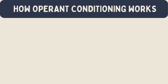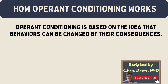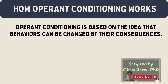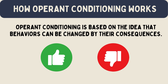How does operant conditioning work? It is based on the idea that behaviors can be changed by their consequences. If a behavior is followed by a good result, it is more likely to happen again. If a behavior is followed by a bad result, it is less likely to happen again.